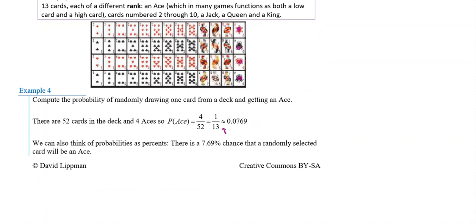To turn that decimal into a percentage, multiply by 100 — or just move the decimal place two positions to the right. So 0.0769 becomes 7.69%. There is a 7.69% chance that a randomly selected card will be an ace. That trick works both ways: moving the decimal two places converts between decimals and percentages.